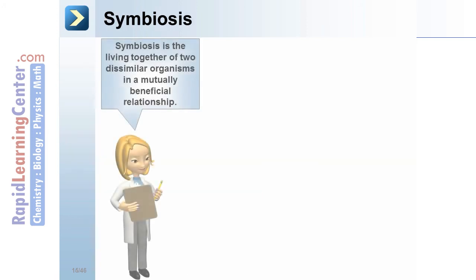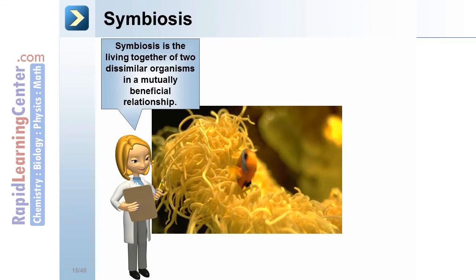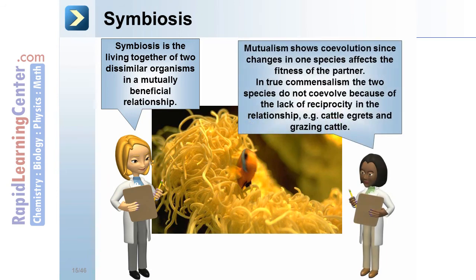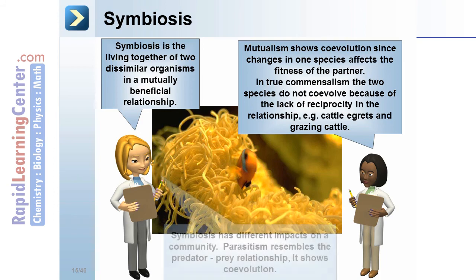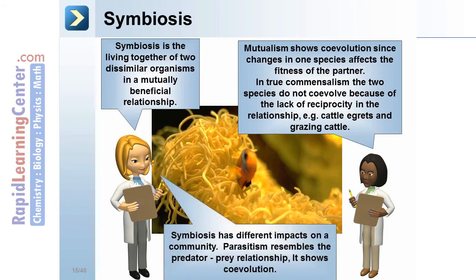Symbiosis is the living together of two dissimilar organisms in a mutually beneficial relationship. Mutualism shows co-evolution since changes in one species affect the fitness of the partner. In true commensalism, the two species do not co-evolve because of the lack of reciprocity in the relationship — for example, cattle egrets and grazing cattle. Parasitism resembles the predator-prey relationship but does not kill the host, and it shows co-evolution.